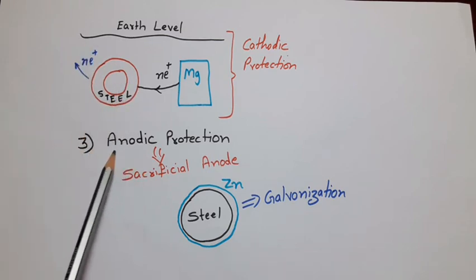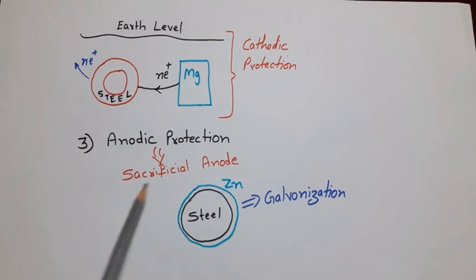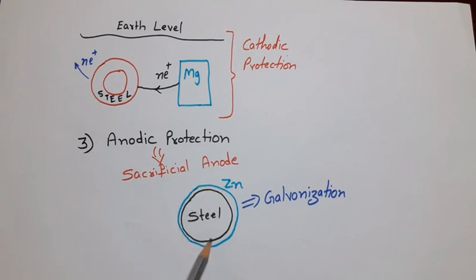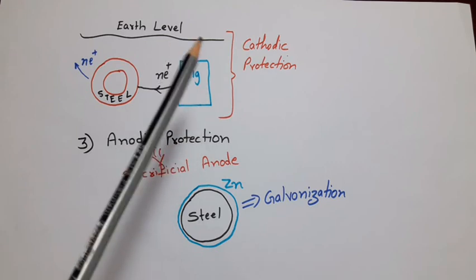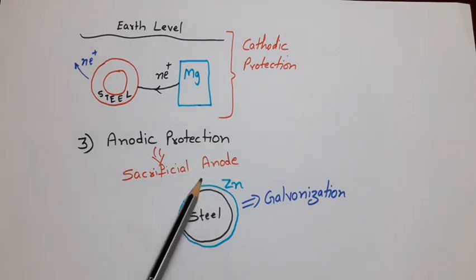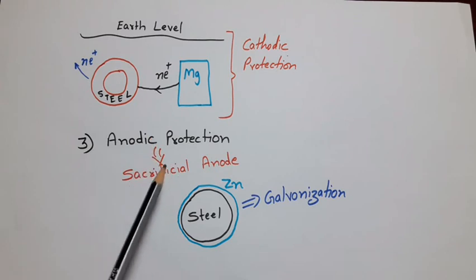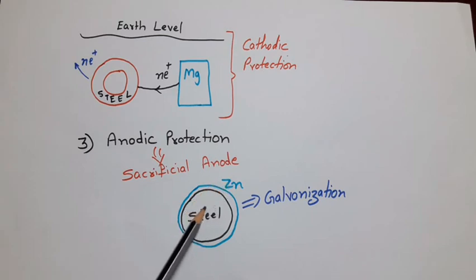The third method for corrosion prevention is anodic protection, also known as sacrificial anode. Here we can save a metal from corrosion if we put a layer of that metal which exists at the top of the galvanic series. For example, coating of zinc on steel. Here zinc has a tendency to easily oxidize, so corrosion of only zinc will happen. This method for the prevention of corrosion is due to the sacrifice of the zinc layer. The coating of zinc on steel can be done by electroplating, and this process where we coat zinc on steel or any other metal is known as galvanization.